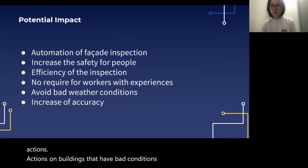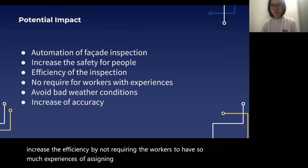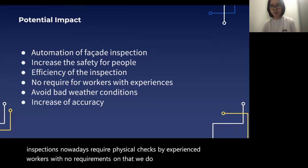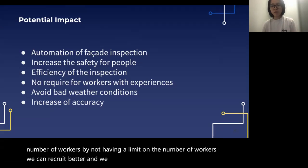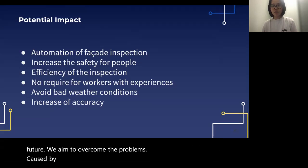We can also increase efficiency by not requiring workers to have so much experience in facade inspections. Since the current facade inspections require physical checks by experienced workers, removing that requirement means we do not have limits on the number of workers. By not having a limit on the number of workers, we can recruit better and increase our efficiency. For the near future, we aim to overcome the problems caused by the deficiency of 3D datasets that include surface deformations.